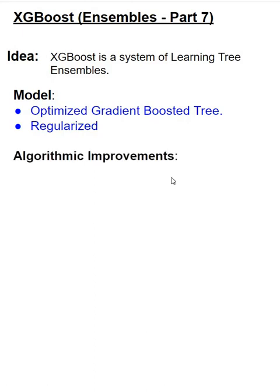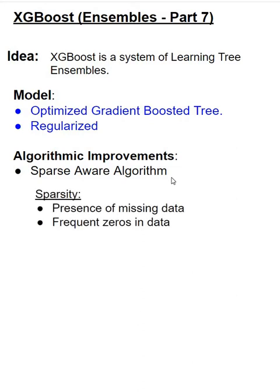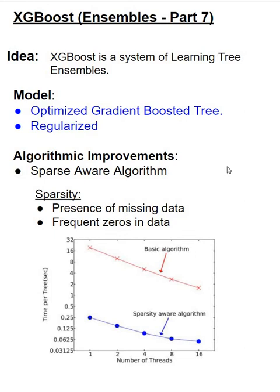The next important idea behind XGBoost is the algorithmic improvements. The first is it's a sparse aware algorithm. Sparsity refers to both missing values and also zero occurrences in the data. A simple example could be that you are implementing an NLP application, and in practice you see a lot of sparse matrices in such an application. With sparsity comes performance challenges. Here we have shown how tree-based algorithms perform when they are sparse aware and when they are not sparse aware.